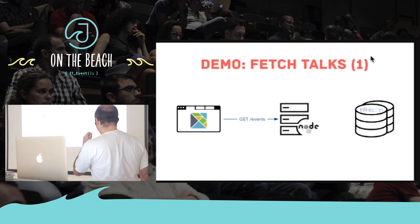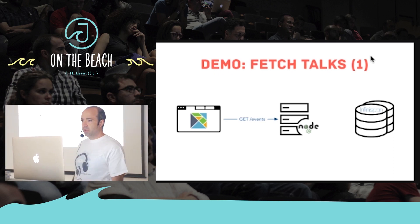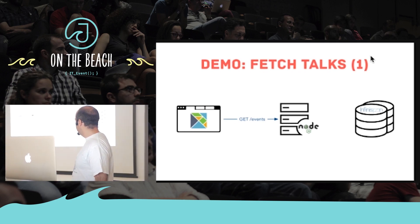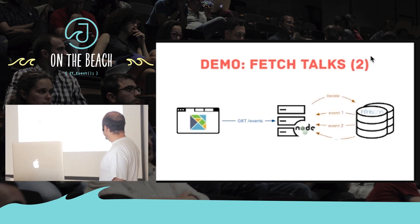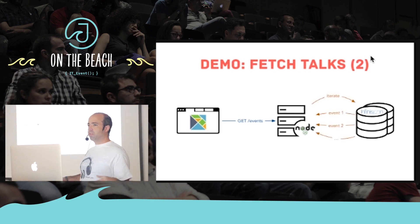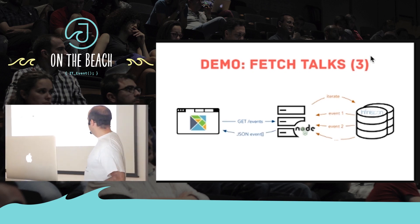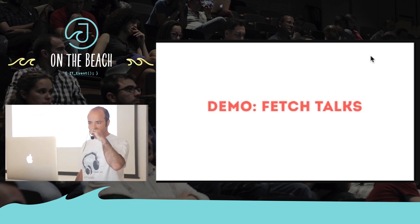The first demo: when the frontend starts, it sends an HTTP GET request on slash events to the middle layer. The middle layer says 'give me all the upcoming events,' and then the backend asynchronously sends those back to the Node.js middleware, which bundles them into a JSON array and sends it back to the front end.